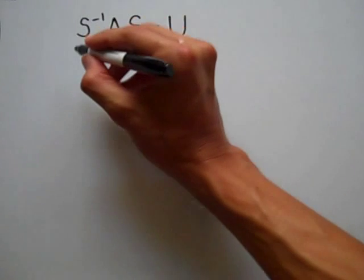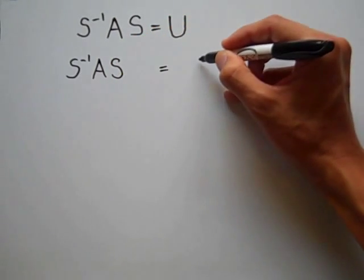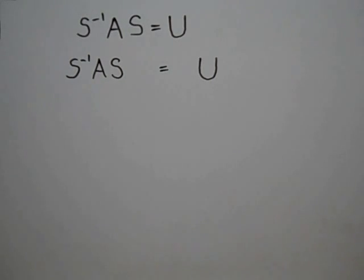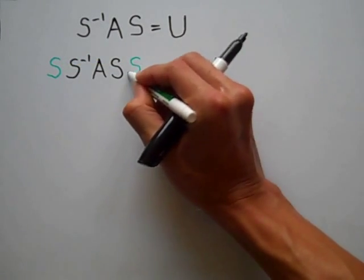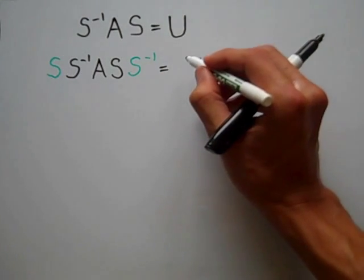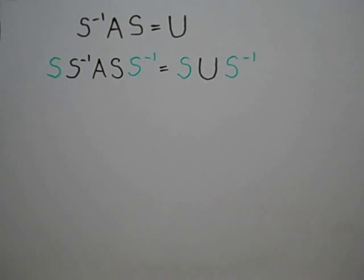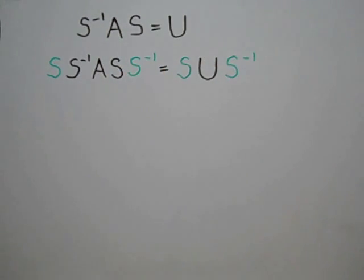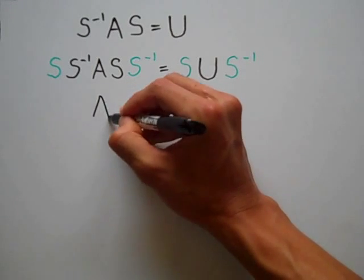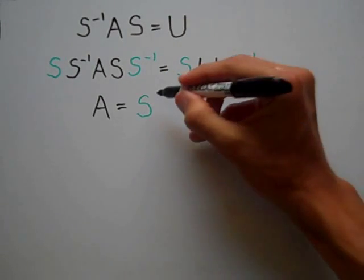Now I want to isolate A. I've got S inverse times A times S is equal to U. To isolate A, I multiply the left-hand side by S on the left and S inverse on the right, and do the same to the right-hand side. This isolates A on the left, and on the right I have S times U times S inverse.